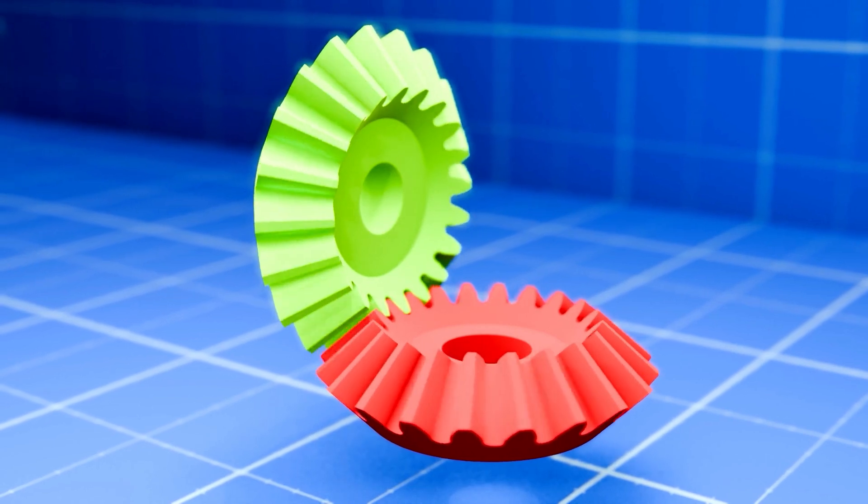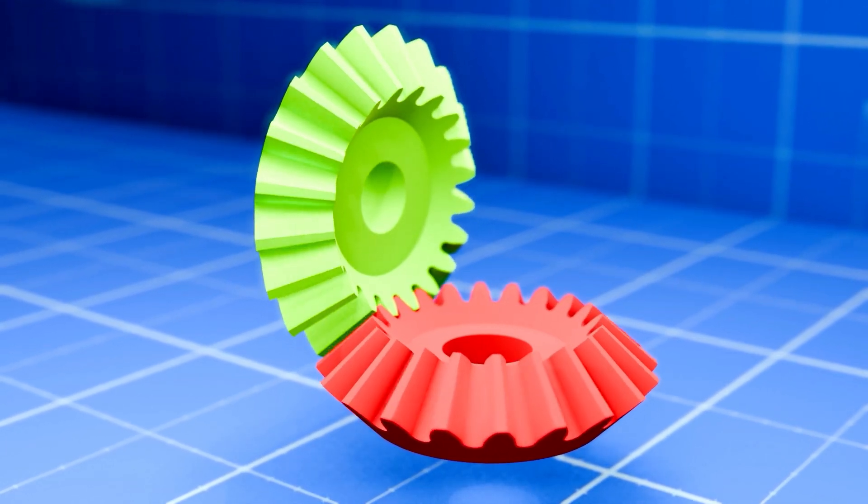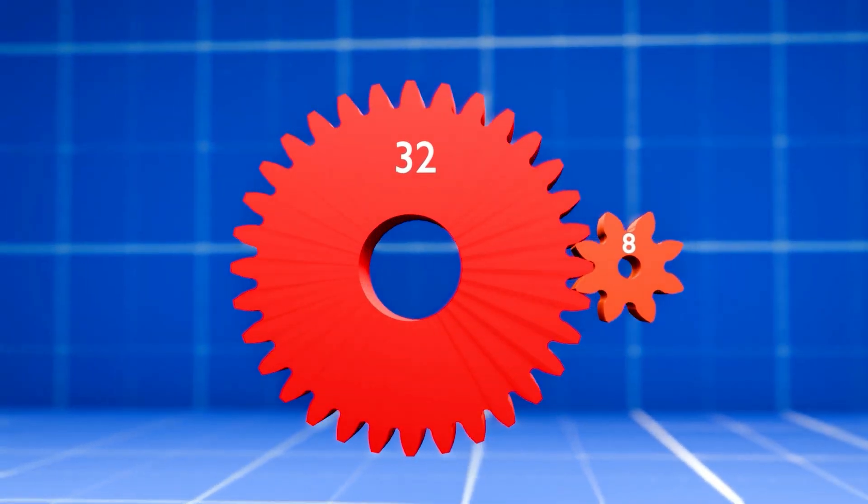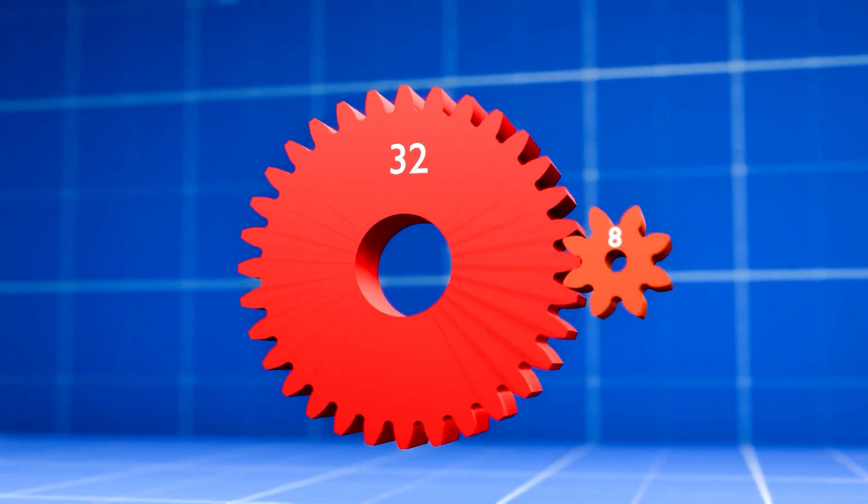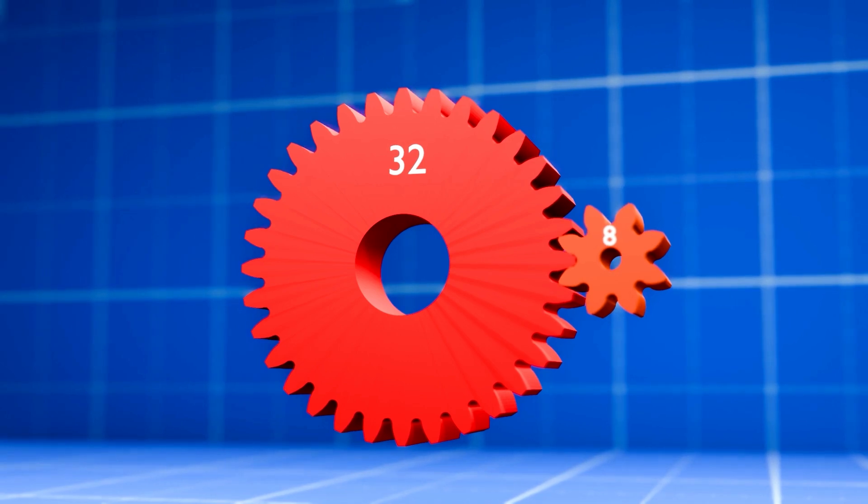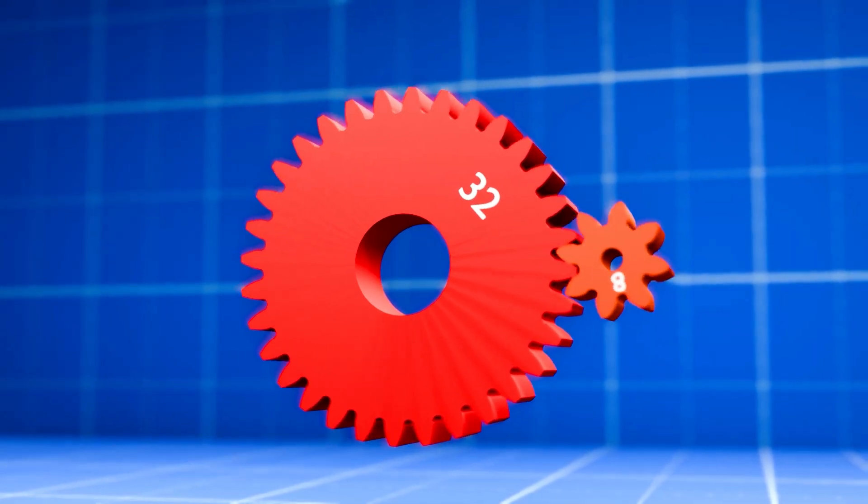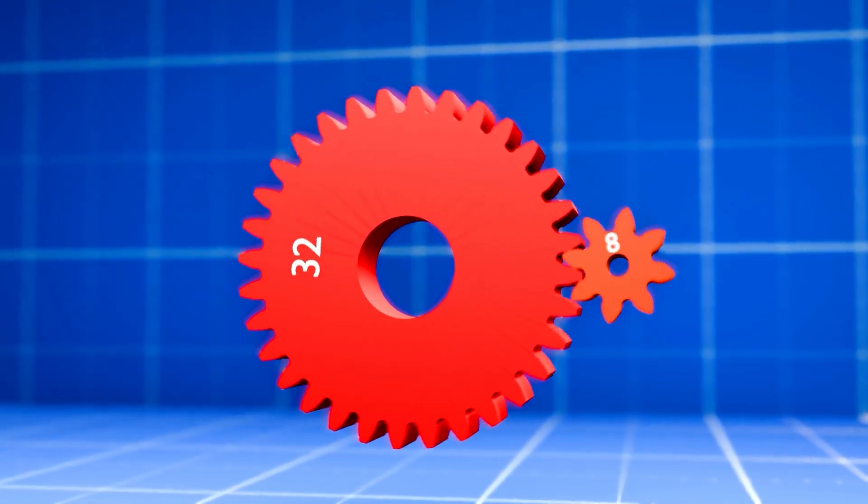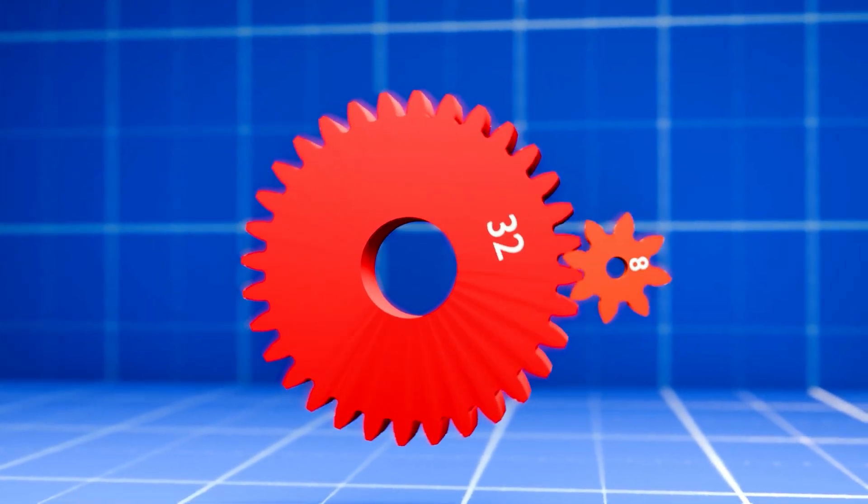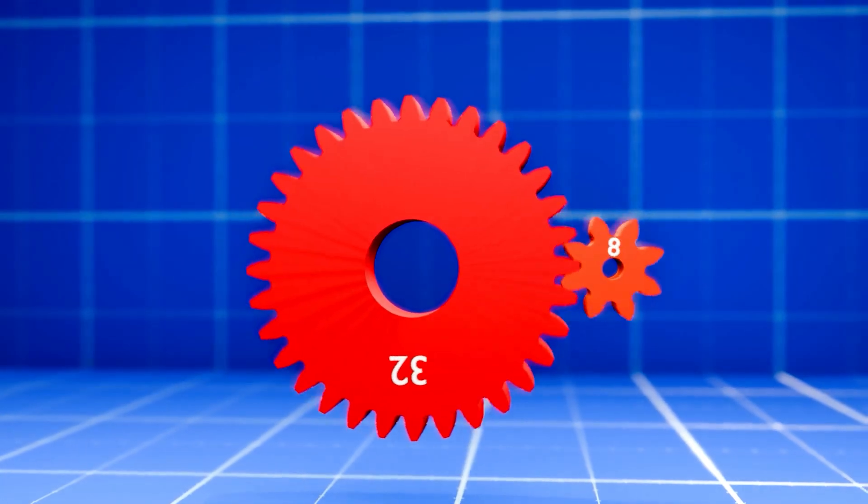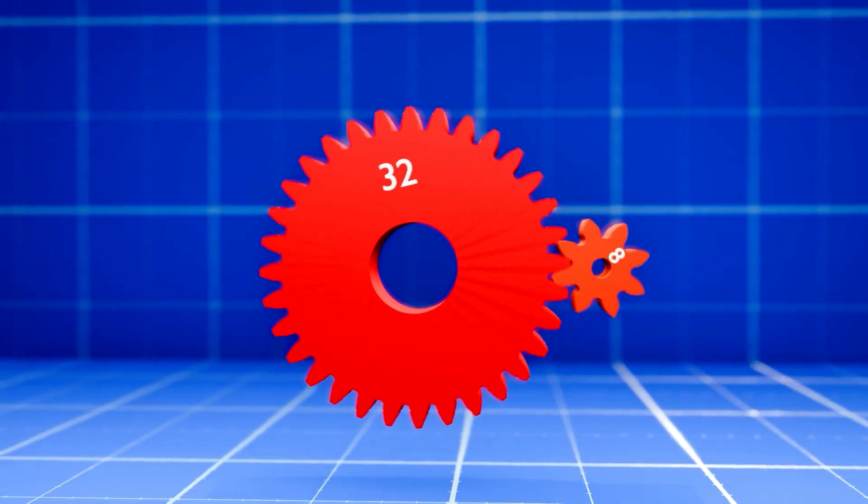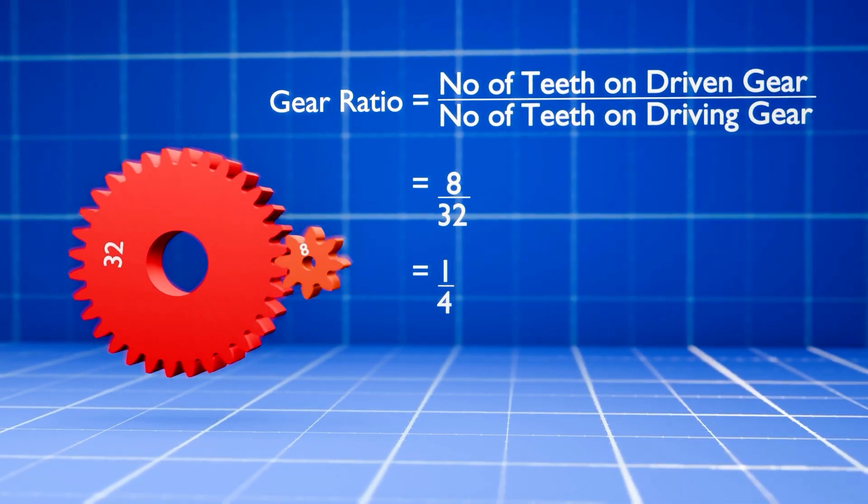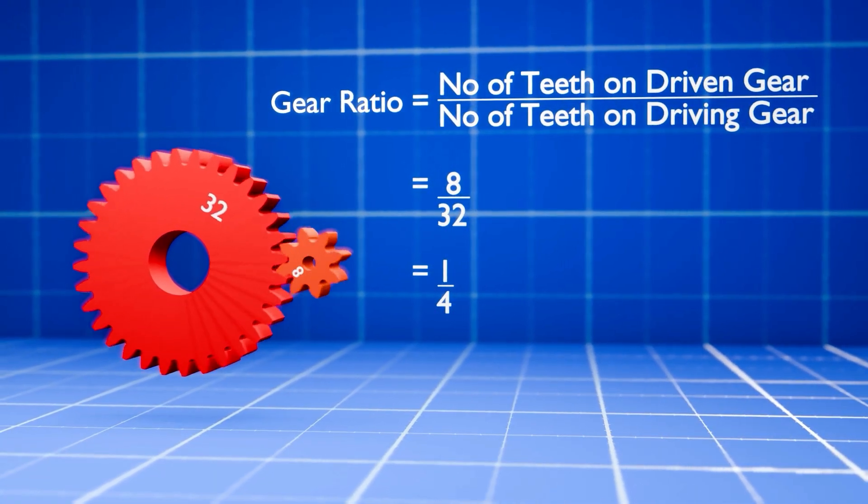Now let's explore how gears can change the speed of motion and the force they create. Picture a large gear with 32 teeth working together with a small gear that has only 8 teeth. When you turn the large gear, the small gear spins much faster. In fact, for each complete turn of the large gear, the small gear turns 4 times. This relationship between how fast the two gears turn is called the gear ratio.